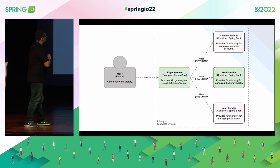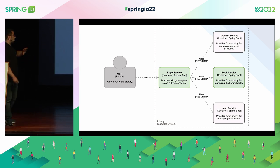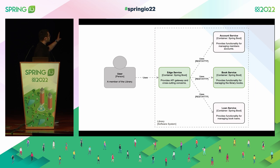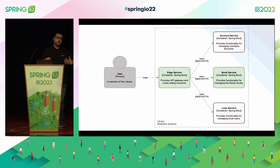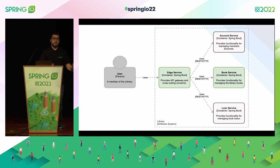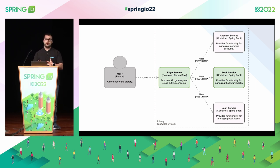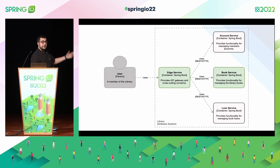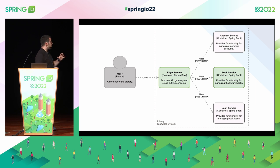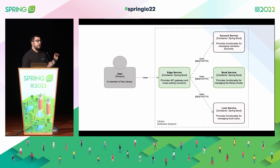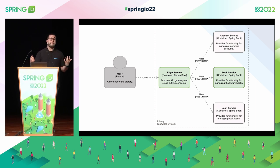We're going to work with a system like this: users calling what is named the edge service. It's not just a gateway — it's a service at the edge of our system providing a lot of different services, including API gateway. We want to handle these cross-cutting concerns there. We'll focus on one back-end service called BookService, but the same applies to any back-end service — it doesn't even have to be a Spring Boot application. You can use Spring Cloud Gateway in a polyglot environment.